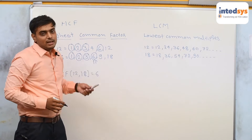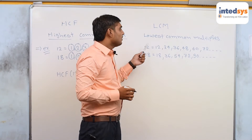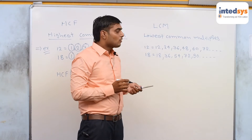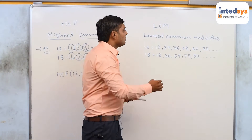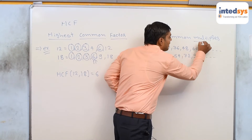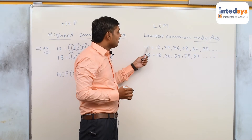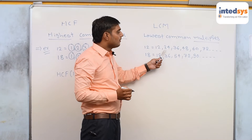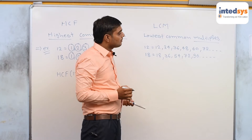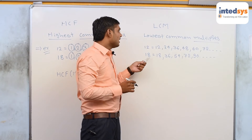Similarly, in case of LCM, LCM stands for lowest common multiples. Now we are starting with multiples — the multiples of 12 and 18. The multiples of 12 are 12, 24, 36, 48, 60 and 72.